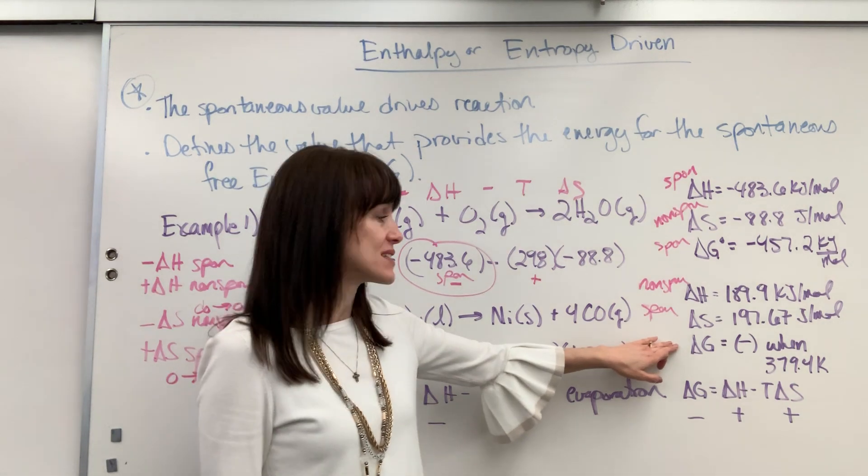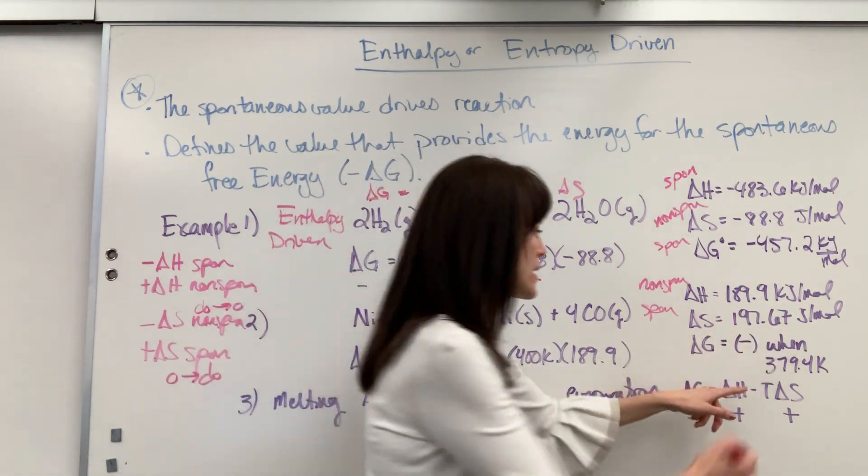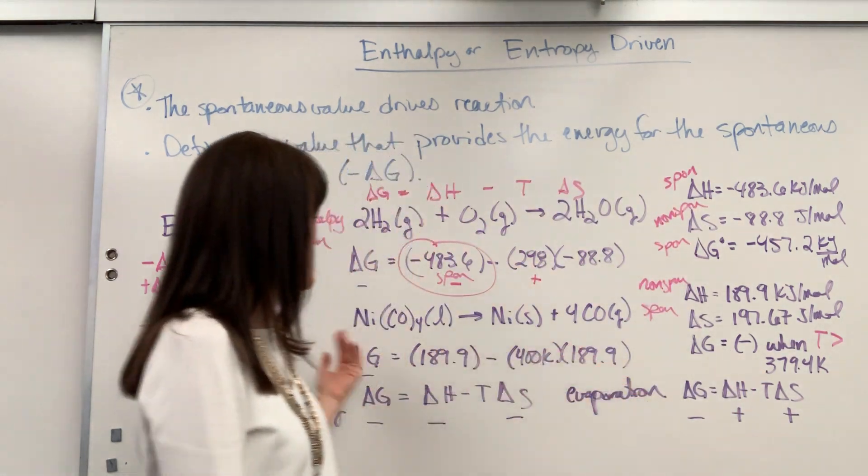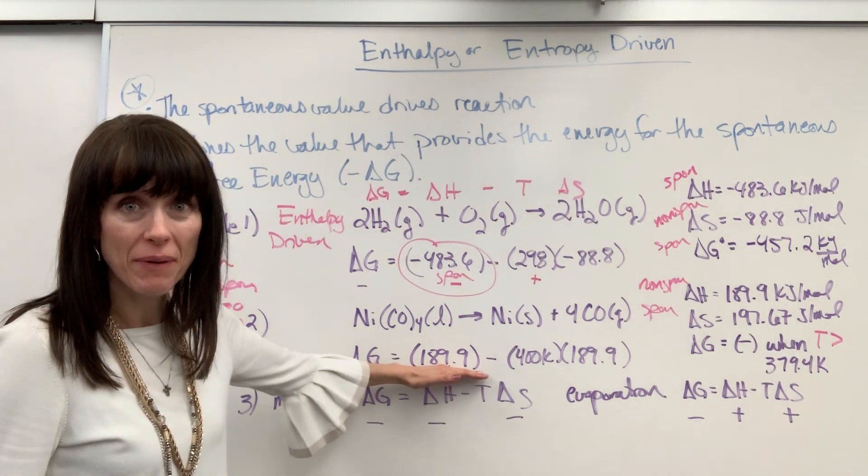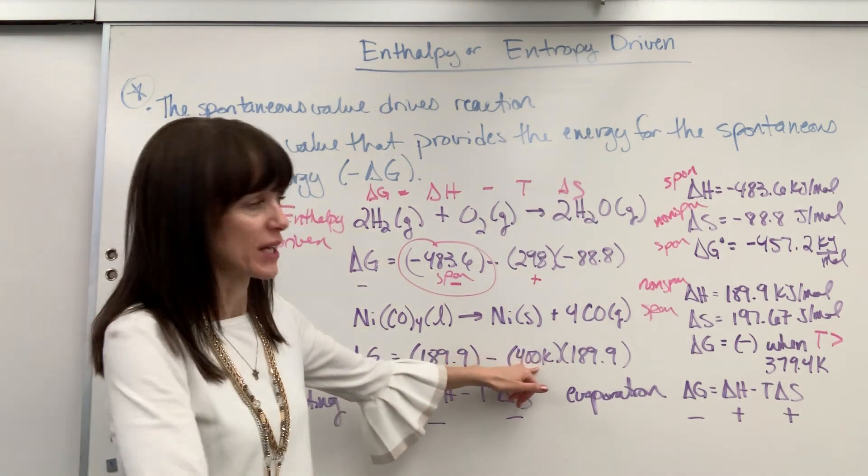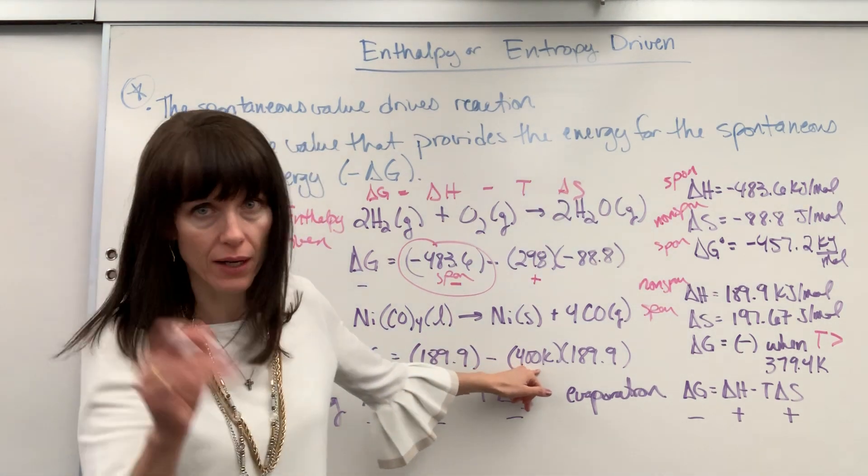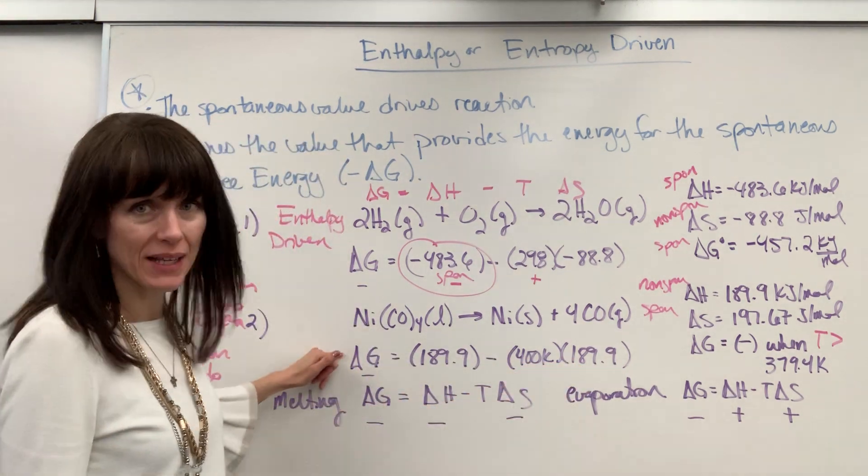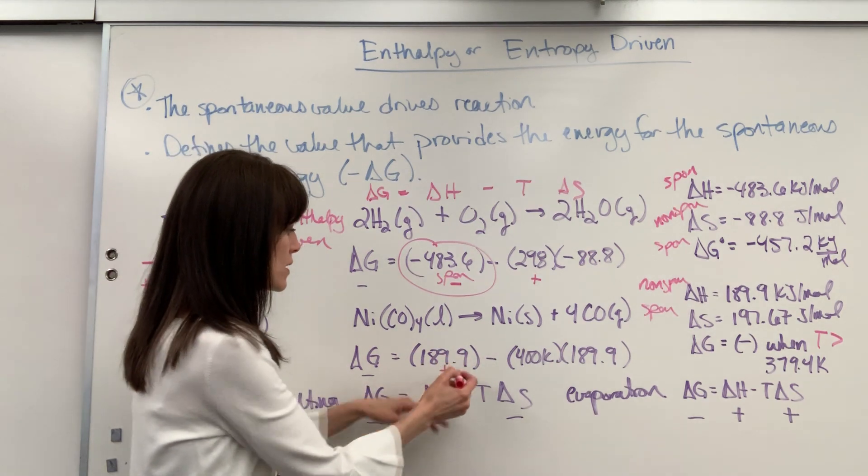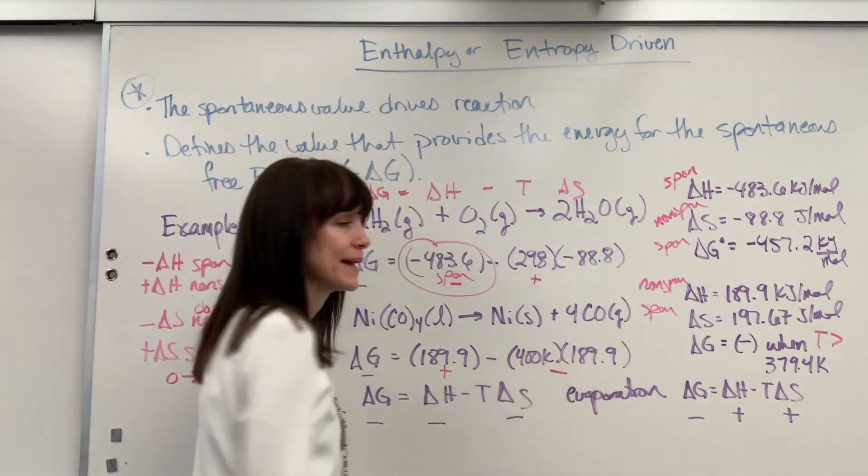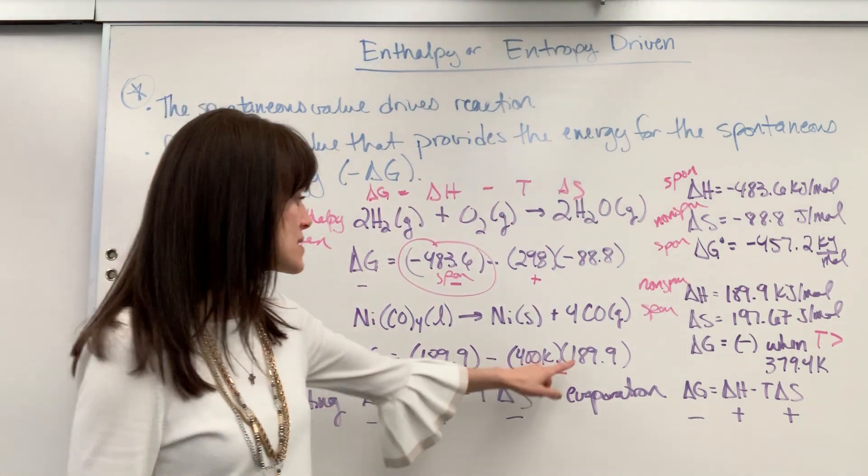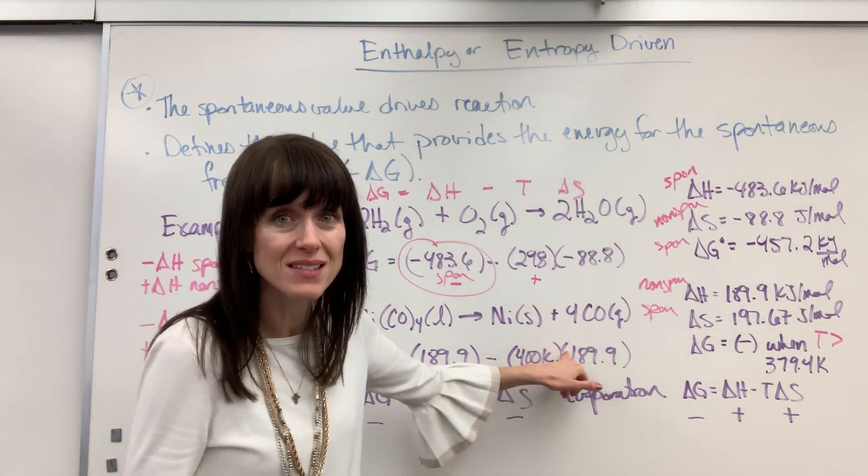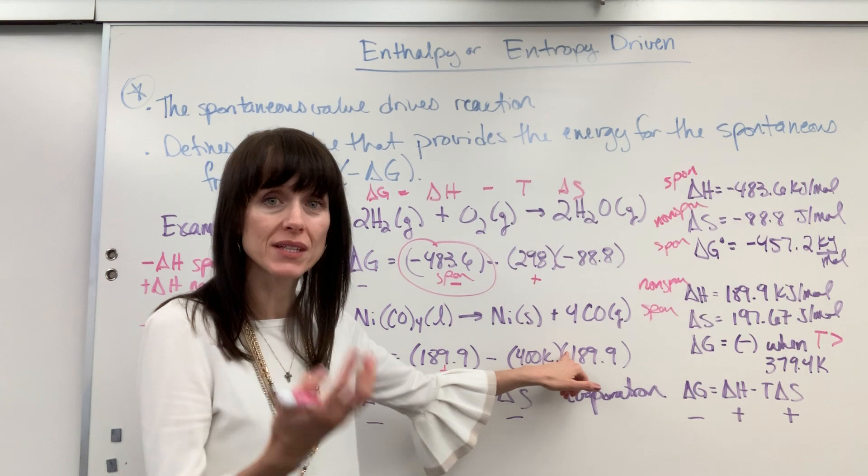Now notice, kind of interesting on this, delta G is negative when the temperature is greater than 379.4. So if I take a scenario, I've got that endothermic, that positive delta H, minus a temperature, I just put it higher than 379. It's a 400 Kelvin. And the delta S is positive. So ultimately, what's making this negative? We have a positive value here from the delta H. Negative times positive, bam, there's the negative. So this is because of the fact that negative times positive, that positive delta S, it is going spontaneously from order to disorder.